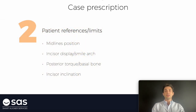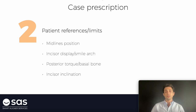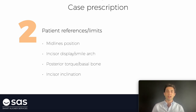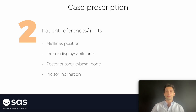The second aspect to take into account for case prescription is patient references or limits. The four main points are: midline position — upper and lower midline position between them and the relationship with the facial midline. The second point is incisor display or smile arc — how is the smile of the patient, if we are going to intrude or extrude upper teeth, whatever we need to do to improve this smile. The other reference or limit is going to be posterior torque and the basal bone of the patient. And from an AP view, we can check the incisor inclination on the lateral x-rays if they are excessively proclined or retroclined.